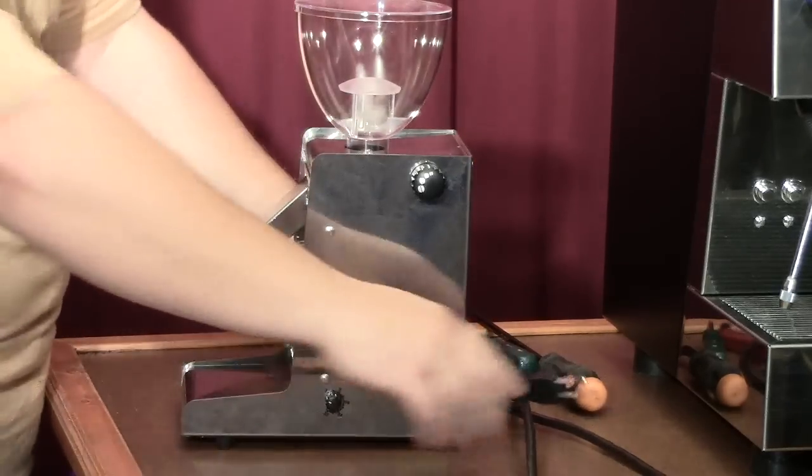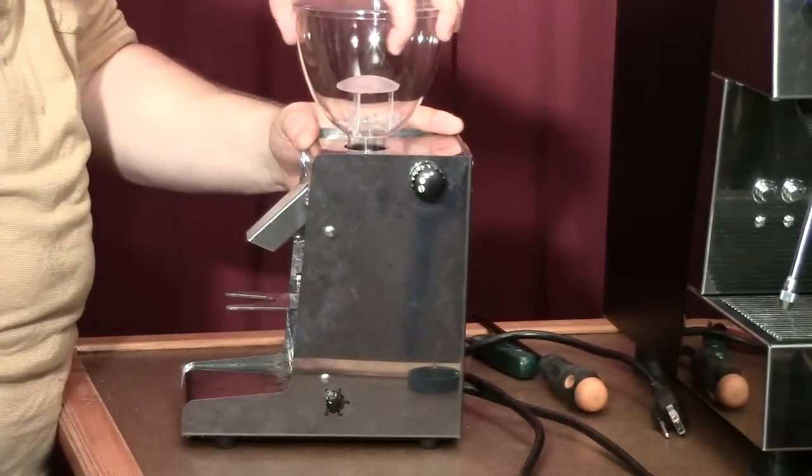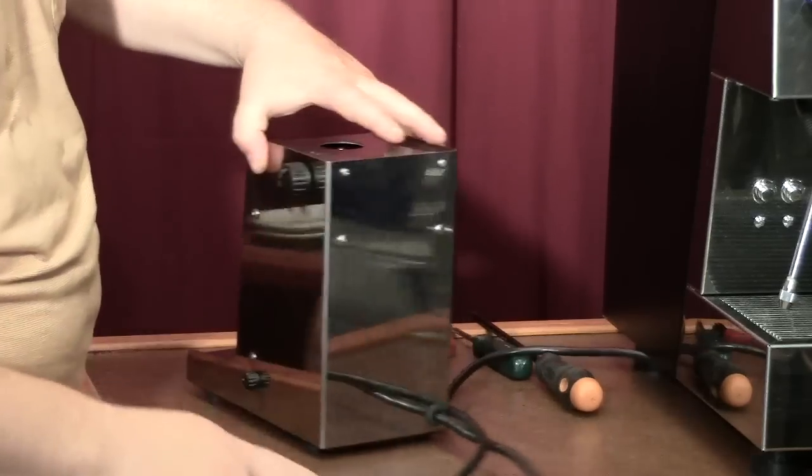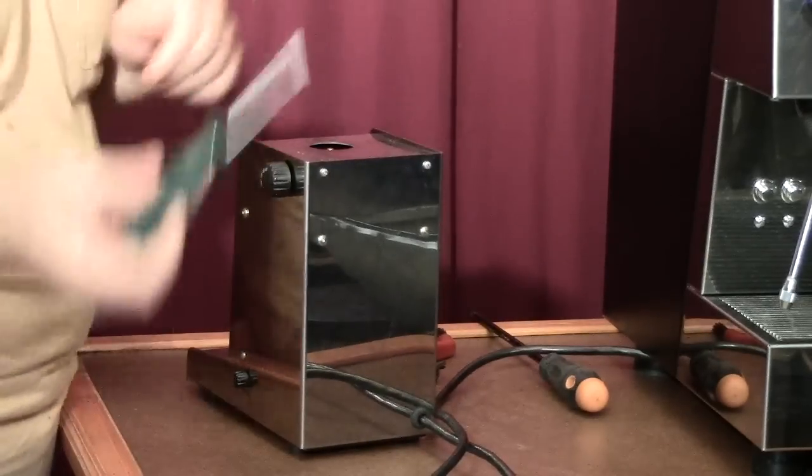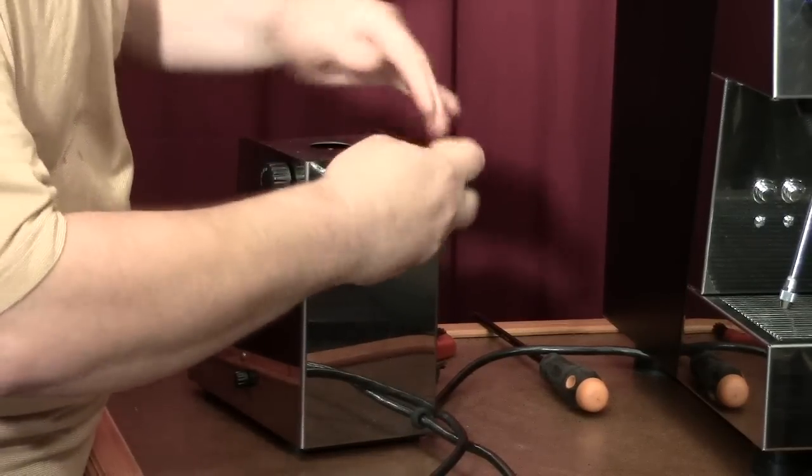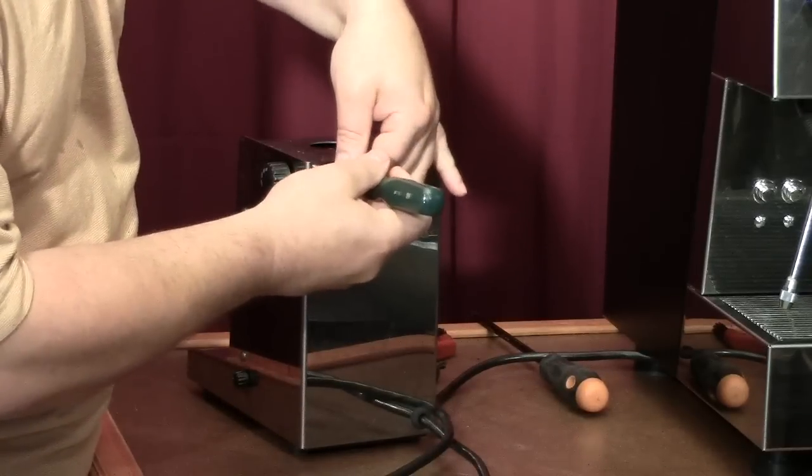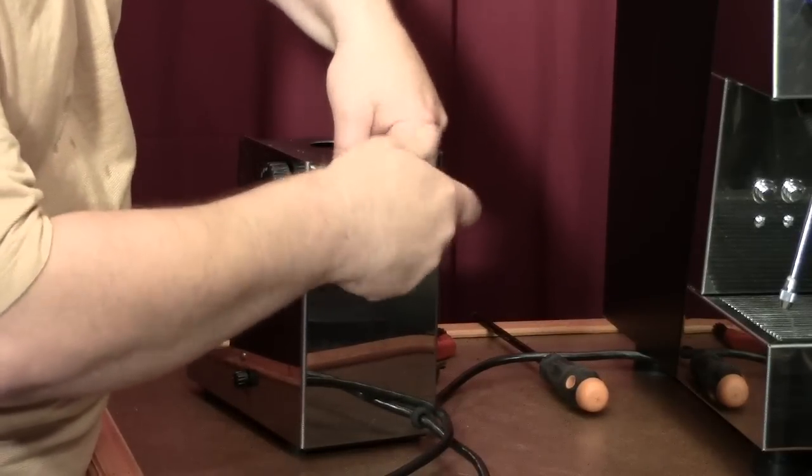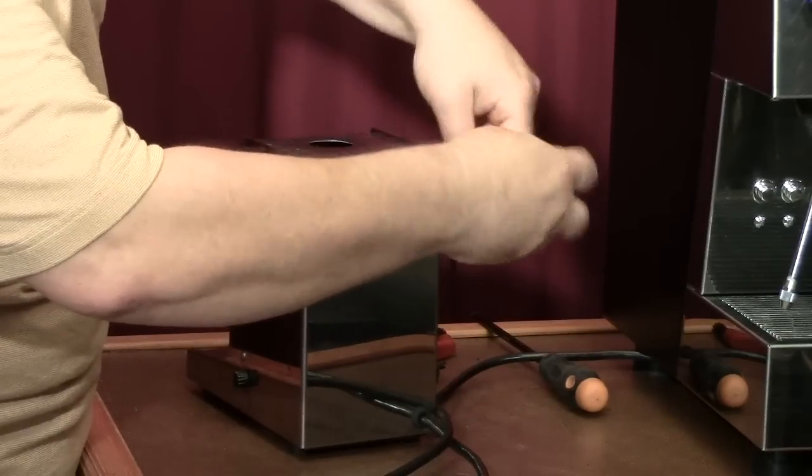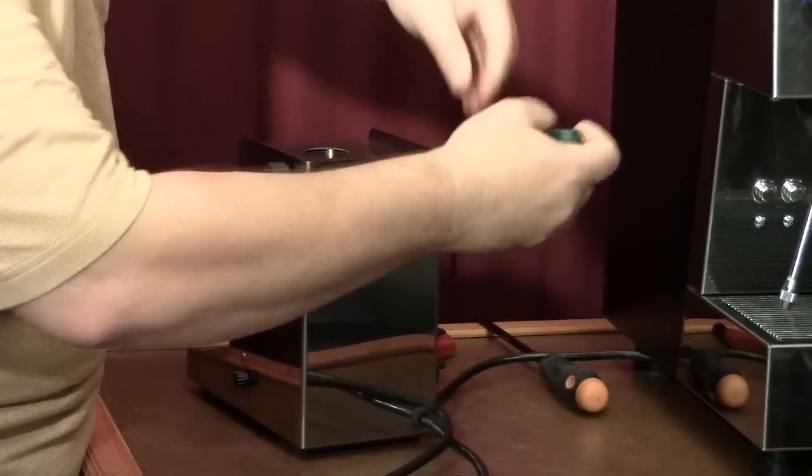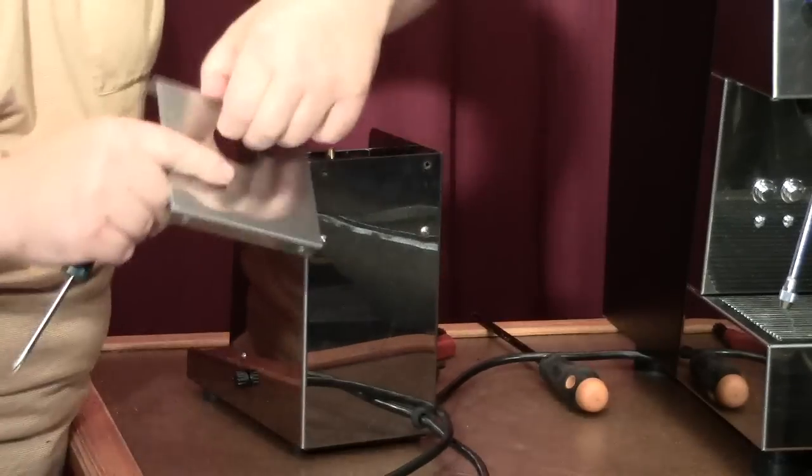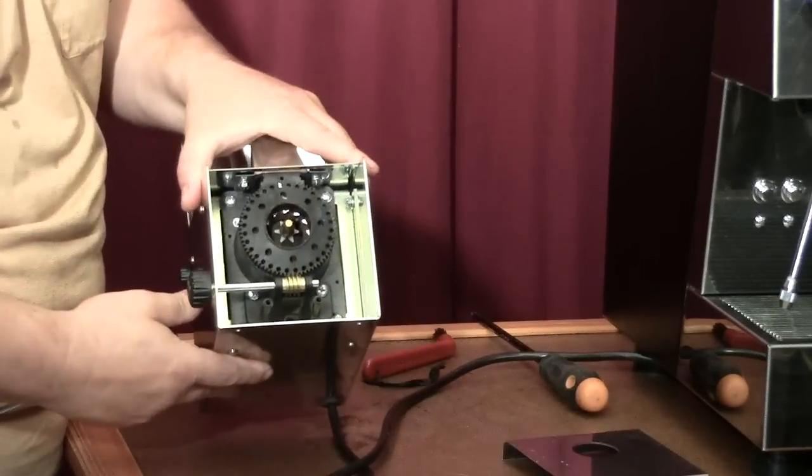Remove the cord and pull out the hopper - make sure you don't have any coffee in it. Get a small Phillips screwdriver and remove these two screws. The lid now comes off - this is the lid and this is the inside of the grinder.